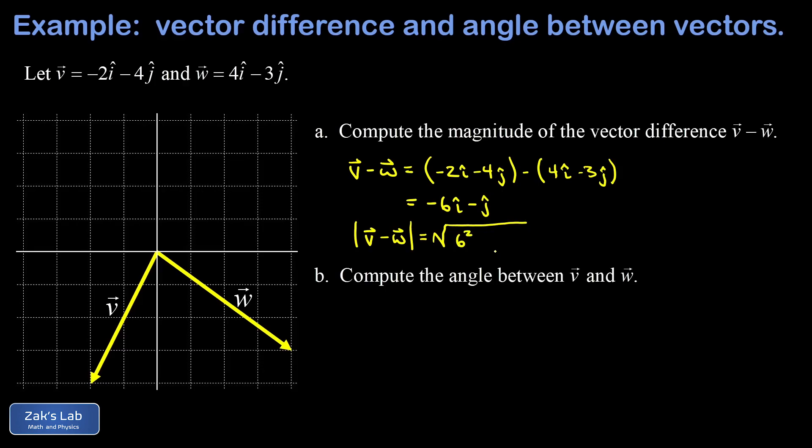Our x component has a length of 6, so I have 6 squared for that leg. And our y component has a length of 1, so I have 1 squared. Taking the square root of that sum, we get √37 as the magnitude of the vector difference.